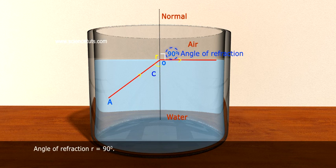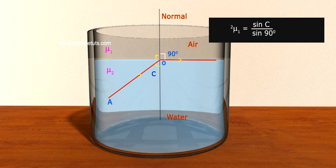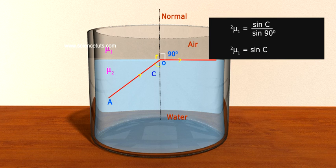Angle of refraction, R, is equal to 90 degrees. 2 mu 1 is equal to sin C by sin 90 degrees. 2 mu 1 is equal to sin C.